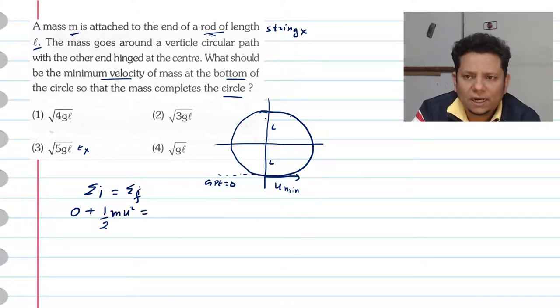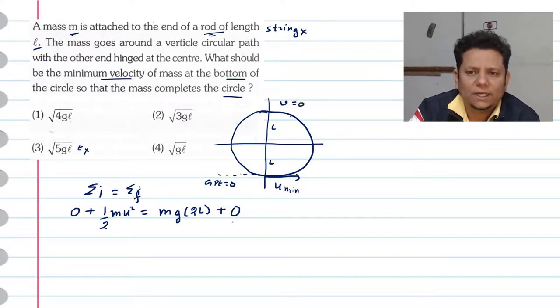When the particle is here at the top, potential energy is M G multiplied by 2L. Plus the kinetic energy. For just sufficient energy, we can put the top velocity as zero. Solving gives U minimum equals 2 square root gL.